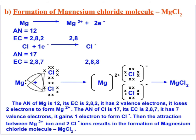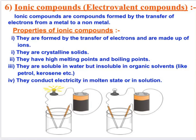Examples of ionic compounds are magnesium chloride, calcium chloride, etc. Now let's study the formation of magnesium chloride. Magnesium has atomic number 12 and electronic configuration 2,8,2. It forms the Mg²⁺ ion by losing 2 electrons. Chlorine gains one electron to form Cl⁻, but since magnesium loses two electrons and chlorine can gain only one, two chlorine atoms are taken. Each gains one electron lost by magnesium, and magnesium chloride (MgCl₂) is formed due to attraction between Mg²⁺ and Cl⁻ ions.